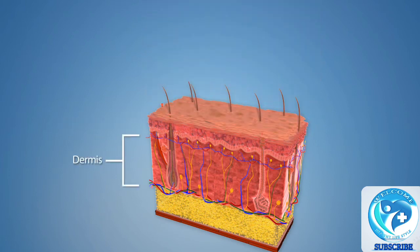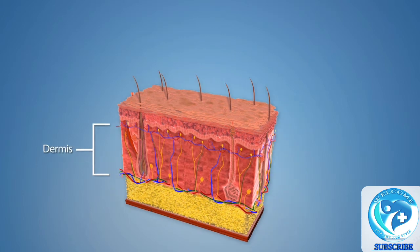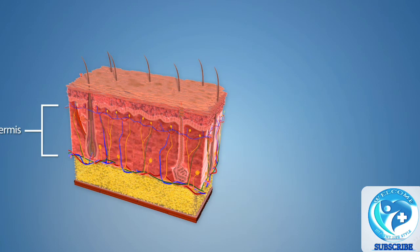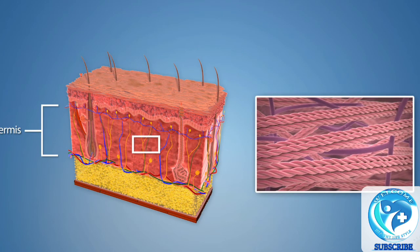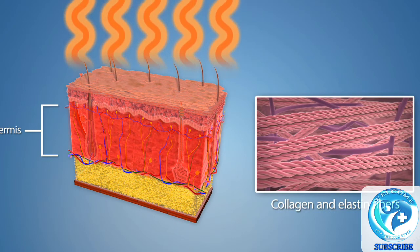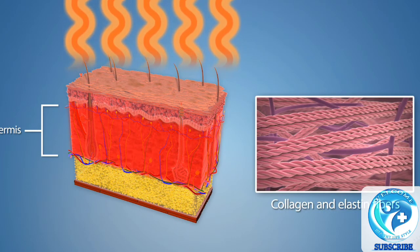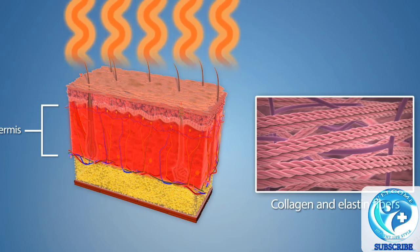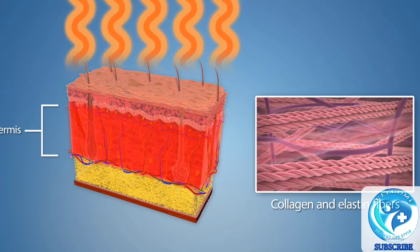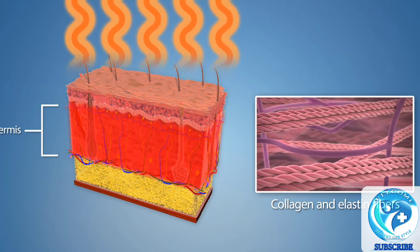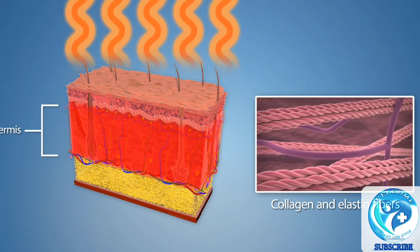The dermis, or innermost layer, is responsible for providing structure and support to the skin. The dermis is composed primarily of connective tissue that provides the skin with a support network made of collagen and elastin fibers. Over time, the dermis also sustains damage, and these collagen and elastin fibers break down, resulting in a loss of skin elasticity and the formation of facial wrinkles.